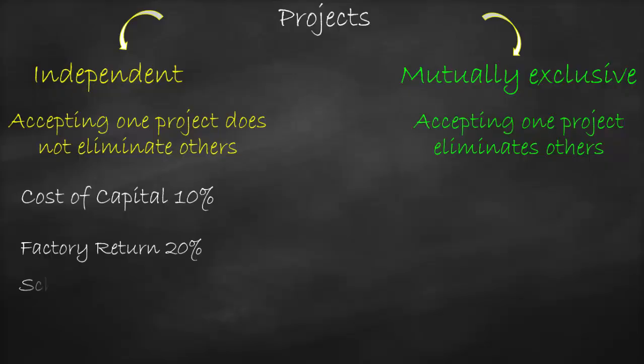For independent projects, let's say the cost of capital is 10 percent. A factory gives a return of 20 percent and a school gives a return of 16 percent. Since both returns are bigger than the cost of capital, we accept both, because they are independent — choosing one does not eliminate the other.